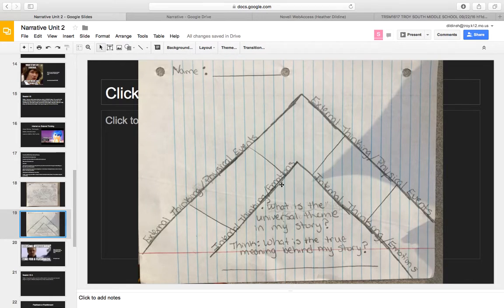The things that are going on on the inside would be internal emotions, things that we can't see physically. So internal thinking, emotions, that would all go on the inside, and they have to correlate with whatever is going on on the top of the plot diagram.